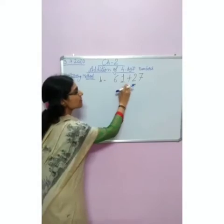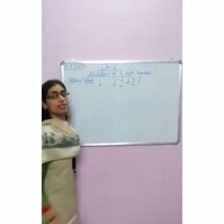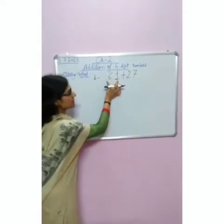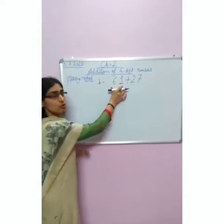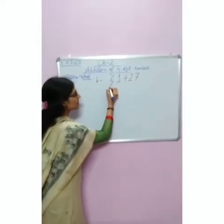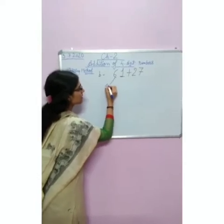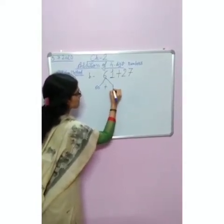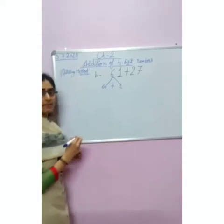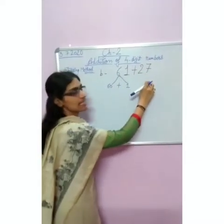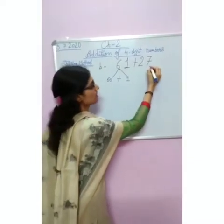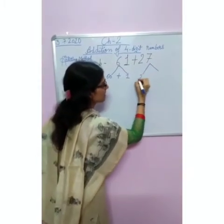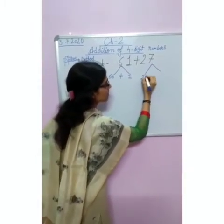The next question is 61 plus 27. So how will we solve this? First, we will split 61 into two parts: 60 plus 1. Then we will split 27 into two parts: 20 plus 7.